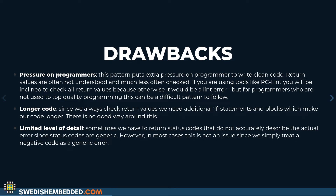The consequence is that you get longer code because you have to check return values and then return another code to the caller indicating there was an error. But again, it's a good thing because your code becomes more robust. Another drawback is that fitting all possible error situations into a limited list of return values gives us a limited level of detail, requiring us to generalize our return codes — but that also reduces ambiguity so you can always have the same expectations regarding return values.